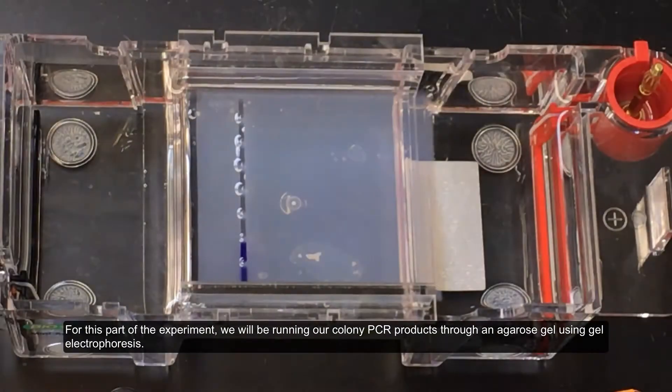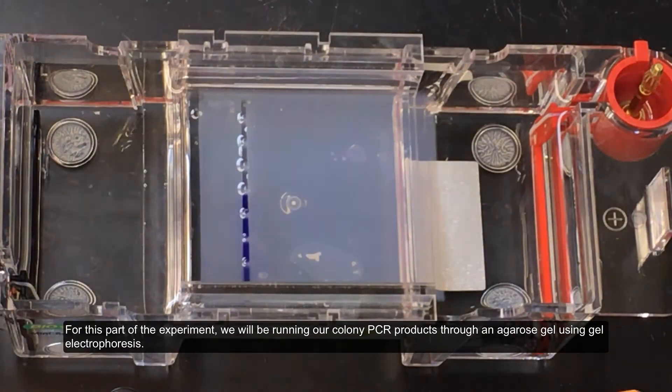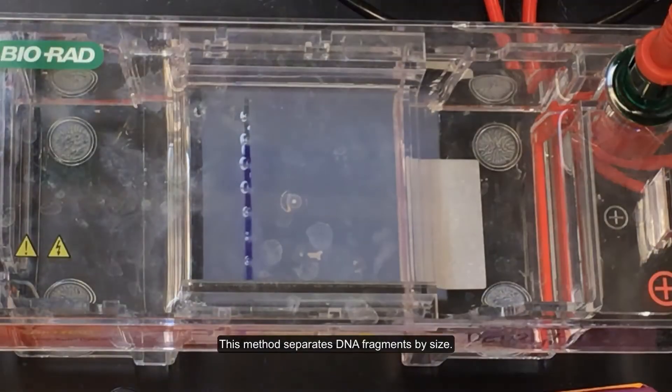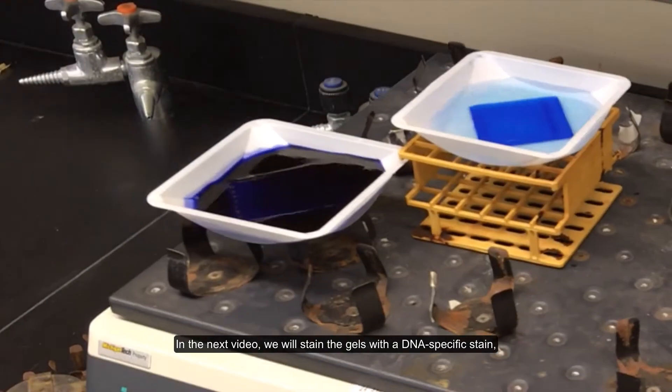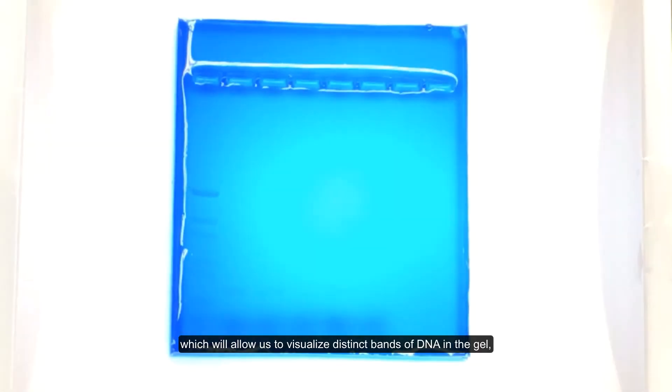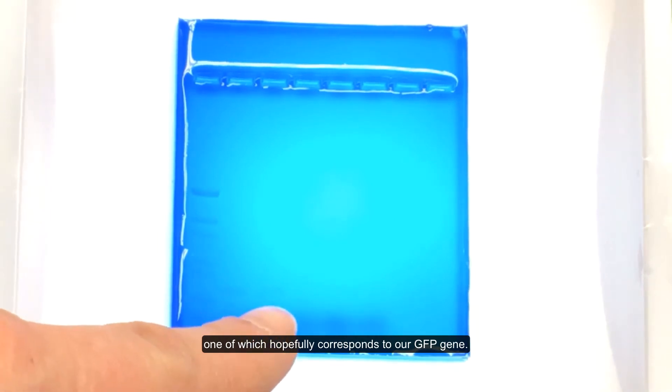For this part of the experiment, we will be running our colony PCR products through an agarose gel using gel electrophoresis. This method separates DNA fragments by size. In the next video, we will stain the gels with a DNA-specific stain, which will allow us to visualize distinct bands of DNA in the gel, one of which hopefully corresponds to our GFP gene.